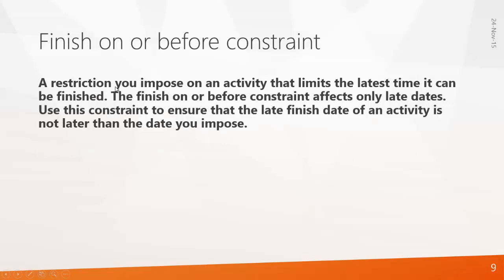The Finish On or Before constraint is a restriction you impose on an activity that limits the latest time it can be finished. It affects only late dates. Use this constraint to ensure that the late finish date of an activity is not later than the date you impose.